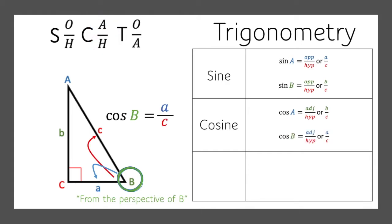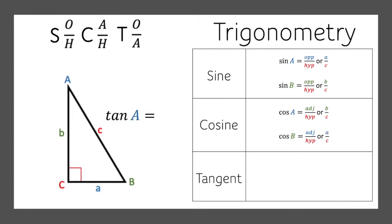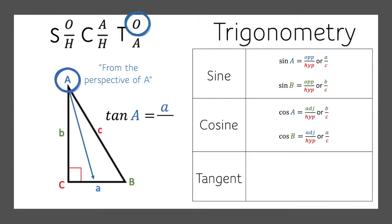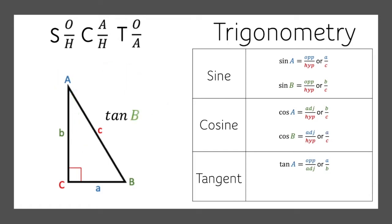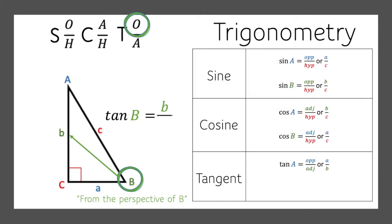And finally, tangent. From the perspective of A, we're just going to leave the hypotenuse out of this, and we're going to go opposite divided by adjacent. So the tangent of A is opposite over adjacent. The tangent of B — same thing, but from the perspective of B: the opposite divided by the adjacent side.